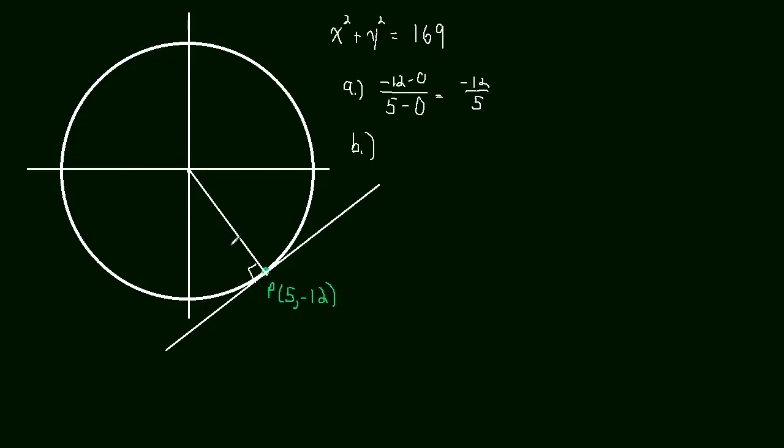Because the slope of the line we just found is really the radius. It was the line joining the point on the circle and the center of the circle. So that's the radius. And this tangent line is perpendicular. And hopefully you remember that perpendicular slopes are negative reciprocals. So the slope of that line is going to be 5 over 12. Positive 5 over 12.